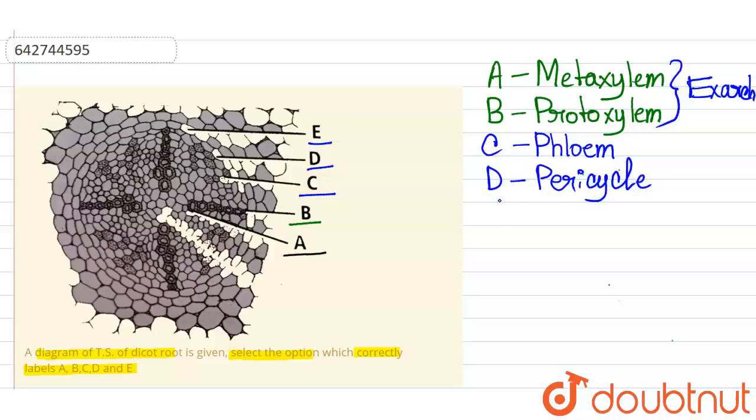And the label E is the endodermis. It is endodermis.